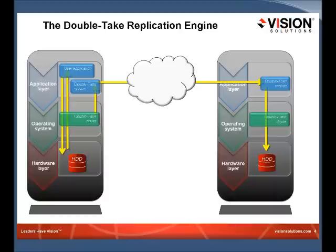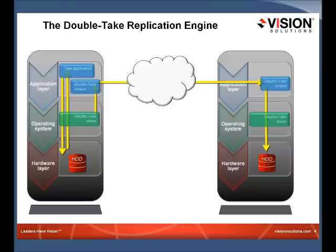On the left-hand side you'll see your source or production server, and on the right-hand side is your backup HA/DR server. You'll install the DoubleTake software, which has two main components: a service component and a file system filter driver. Once installed, you'll use one of our consoles to set up protection for your server, walking you through the process of choosing a replication set — the data set you intend to protect.